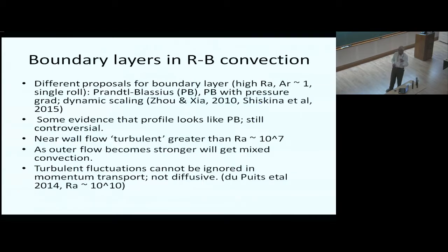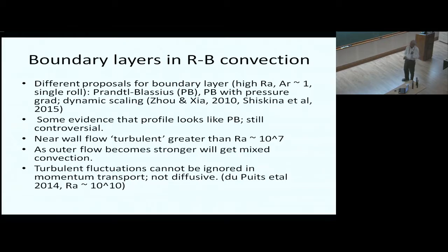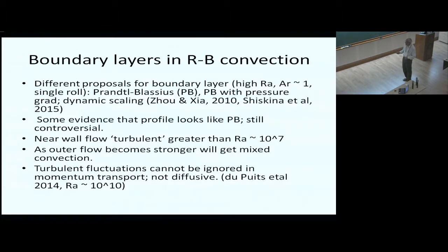We are trying to develop a boundary layer model accounting for this effect. For boundary layers in Rayleigh-Bénard convection there have been many different proposals — starting with Prandtl-Blasius, Prandtl-Blasius with pressure gradient, and attempts at dynamic scaling where you re-normalize at each instant of time. But it's not very convincing because it is not really laminar flow. The profile looks sort of like Prandtl-Blasius, but there remains a lot of controversy.